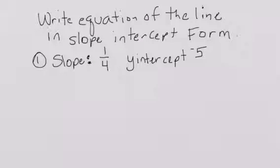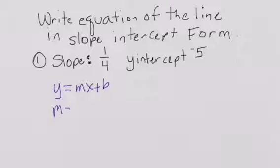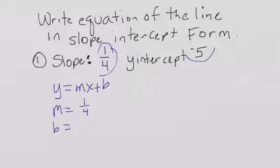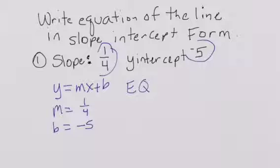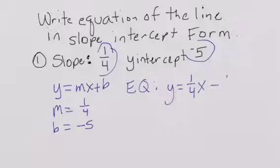Write the equation of the line in slope-intercept form. When we see those instructions, our first thing is to write three things: Y is equal to MX plus B, M equals, B equals. Our M we are given is one-fourth, and our Y-intercept we are given is negative five. So the equation is Y is equal to one-fourth X minus five.